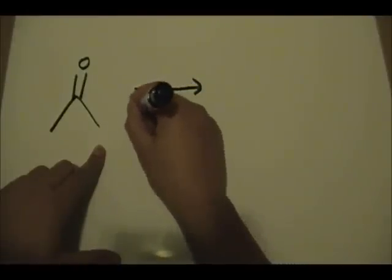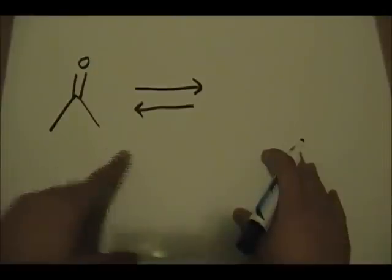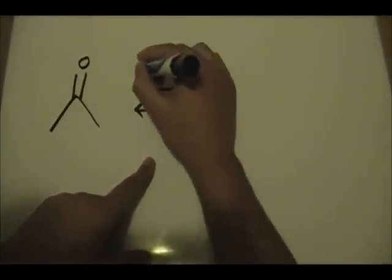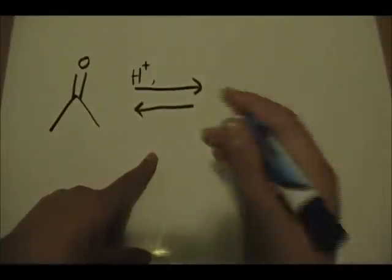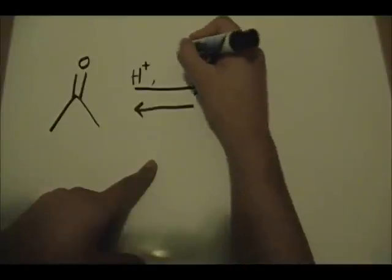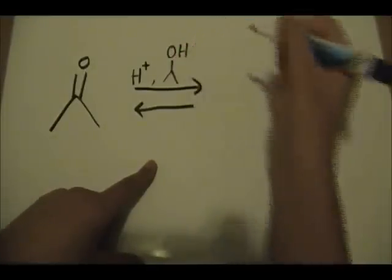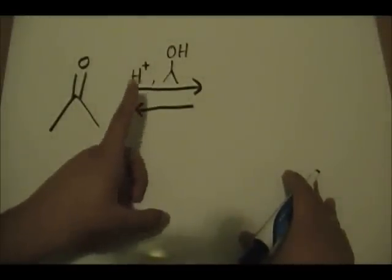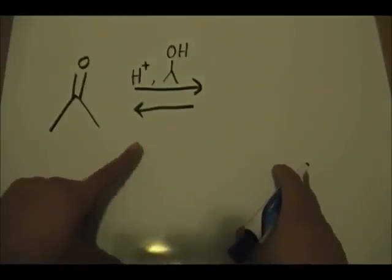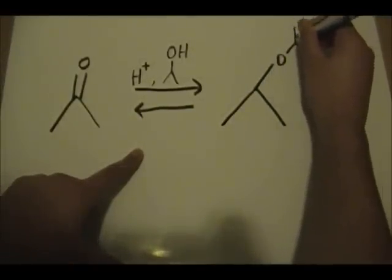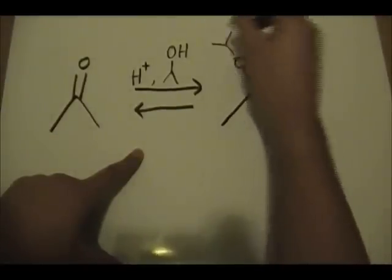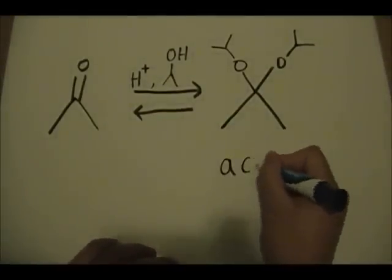So let's say we start off with this ketone over here. Since this is at equilibrium and it's also reversible, the reagents you use to form an acetal are H+ — a proton source — and any type of alcohol. In this specific example I'll use a secondary alcohol. So the product of this reaction is the acetal.